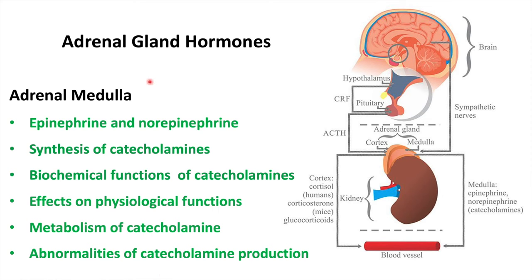So what is adrenal medulla? As you can see here, this is the adrenal gland, which is present above the kidney. This adrenal gland has two parts: the outer part is called the cortex and the inner part is called the medulla. Epinephrine and norepinephrine are released from the adrenal medulla, while the adrenal cortex releases cortisol hormones in humans and corticosterone in mice.